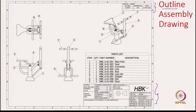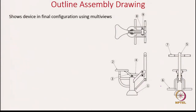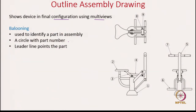In addition to all the information in the title block, we also have what we call the bill of materials. The reason we use the outline assembly drawing is to show the device in its final configuration using multi-views. But instead of multi-views we can also use the pictorial to quickly show the design. We use a concept called ballooning to show the different parts in this assembly.